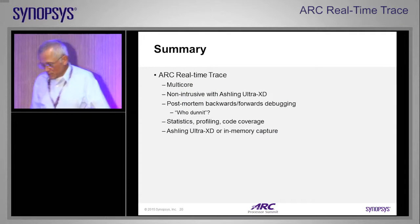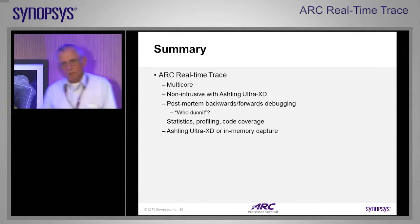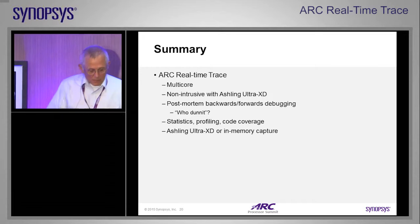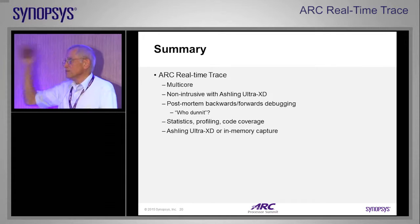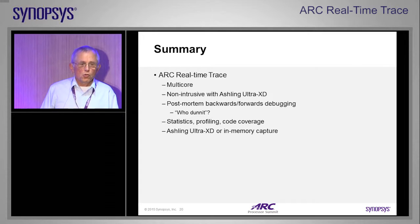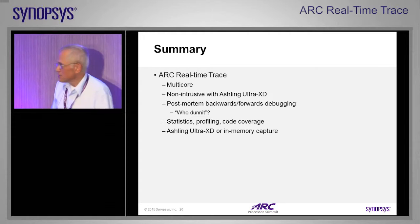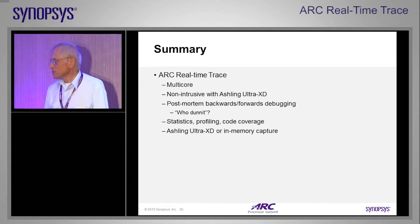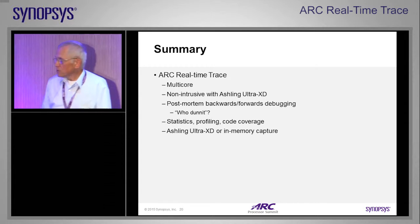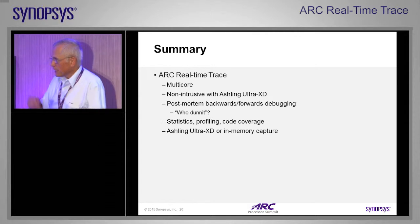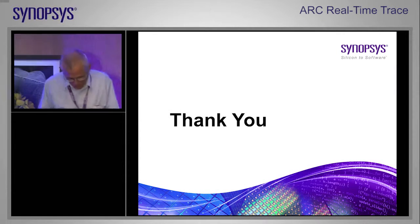To summarize: the trace is multi-core, supporting multiple EM and multiple HS cores. When you have an Aisling or a Lauterbach, you get non-intrusive trace. You get this replay capability, statistics profiling, and code coverage. You can capture it with the Aisling or the Lauterbach, or in memory. Thank you very much.